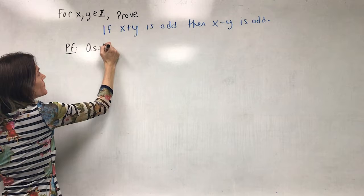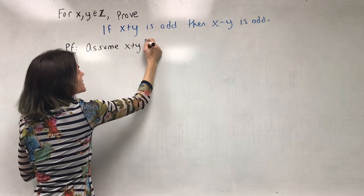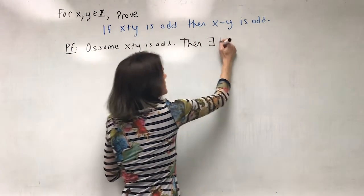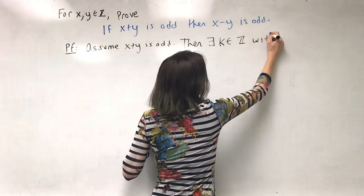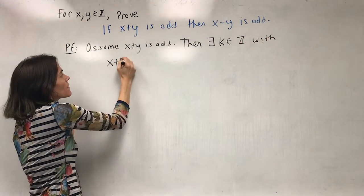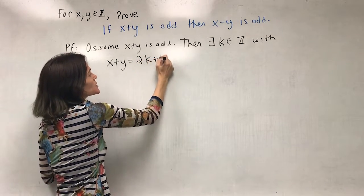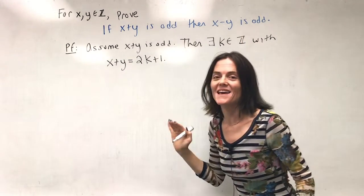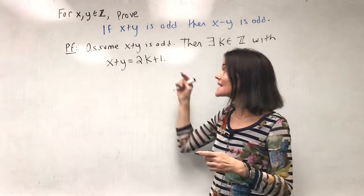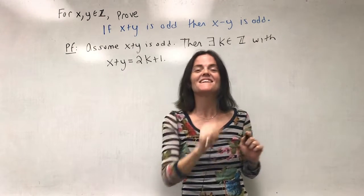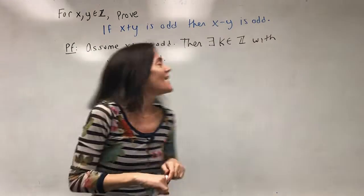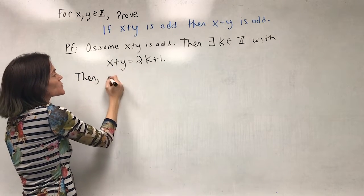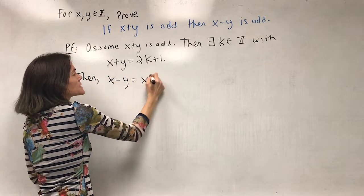We will work with definitions. We assume x plus y is odd. Then there exists some integer k with x plus y equals 2k plus 1. This is the definition of odd. We're trying to show that x minus y is odd, which means we need x minus y to be 2 times an integer plus 1. We can get x minus y from x plus y.